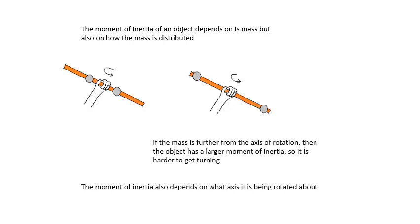If the mass is further away from the axis of rotation, then the object has a larger moment of inertia, so it's harder to get turning. The moment of inertia depends on the mass of the object. It depends on how the mass is distributed. It also depends on what axis we are turning about. In this experiment, we're turning about a central axis. Try holding it somewhere else and try turning it and see what difference it makes. It depends on the axis that we are turning the object about.